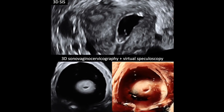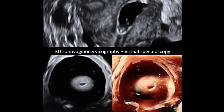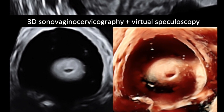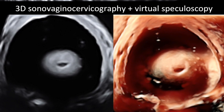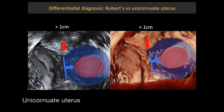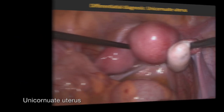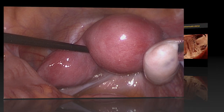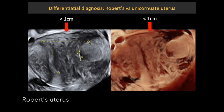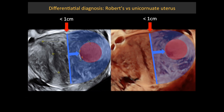The cervix looks anatomically normal. In women with intact hymen, it may be diagnosed using transrectal three-dimensional saline infusion sonovaginocervicography. The external fundal cleft greater than 1 cm, indicated by the red arrow, and narrow attachment of the pedunculated horn are suggestive features for differential diagnosis of the unicornuate uterus. An external cleft less than 1 cm, or its lack, and wide attachment of the horn with a single uterine body are characteristic for the Robert's Uterus.